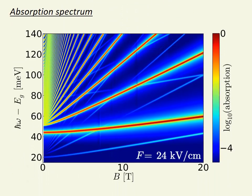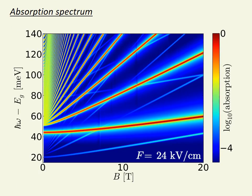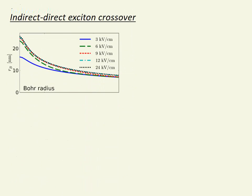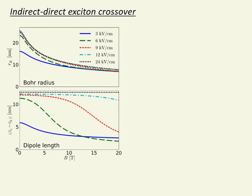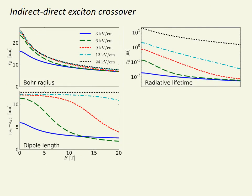We also map the electric and magnetic field dependence of the exciton absorption spectrum, where we see the Landau fans of direct and indirect excitons. For the exciton ground state, we calculate a number of properties, such as the Bohr radius, dipole moment, radiative lifetime, and binding energy.